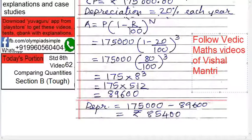So it becomes 89,600. So A equals to 89,600. But what we want is depreciation. Depreciation means initial amount minus this new amount, because in compound interest you might have studied—which we had done in our earlier video—this amount minus principle. Similar logic: principle...